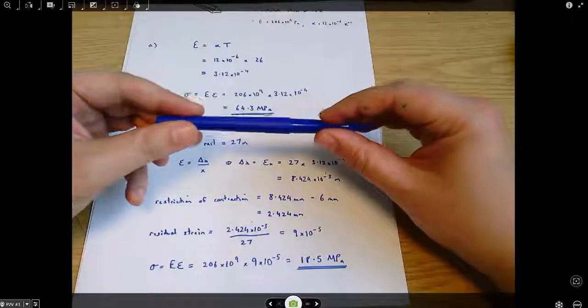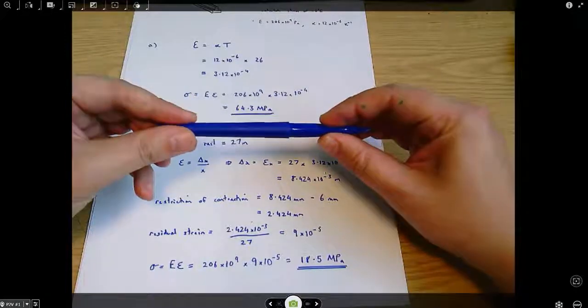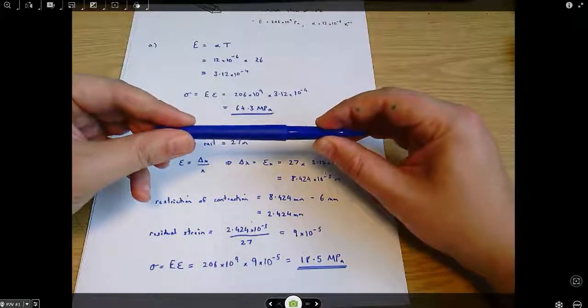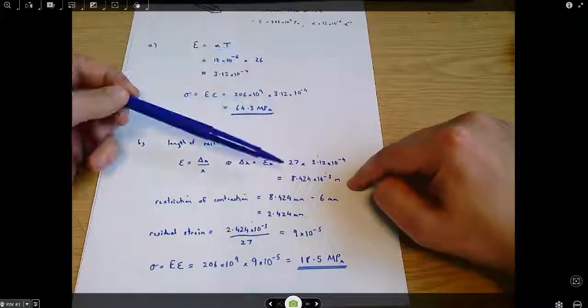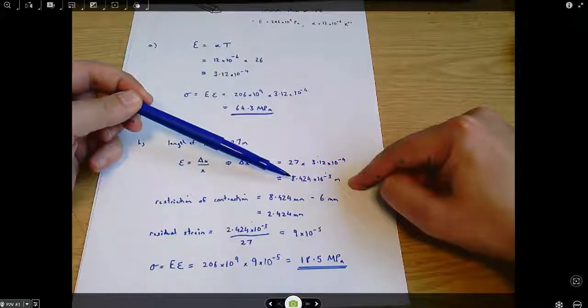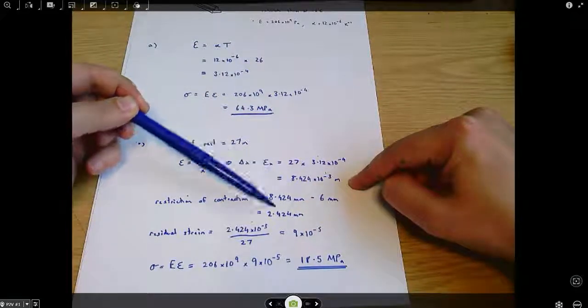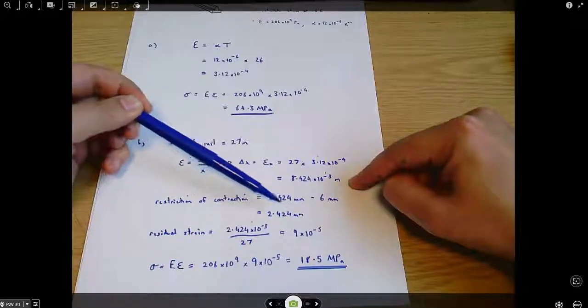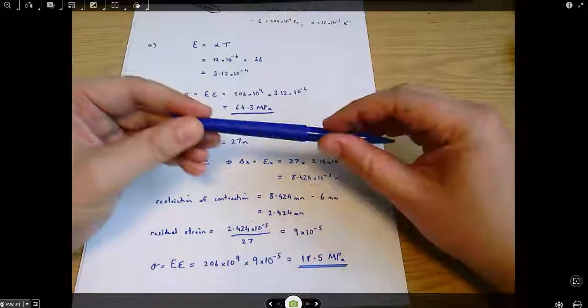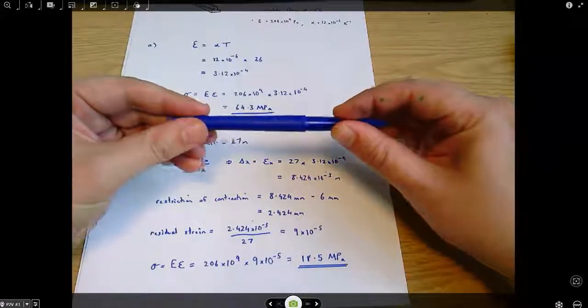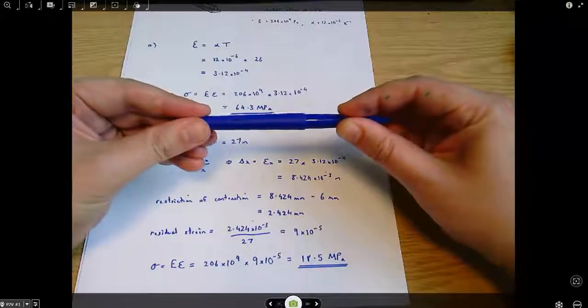In the second case, the rail is allowed to contract 6 millimetres, but it wants to contract more than 6 millimetres. It wants to contract about 8.5 millimetres, this number here. And so, what's left is 2.5 millimetres that is residual kind of length that it's been stretched out from where it wants to be.